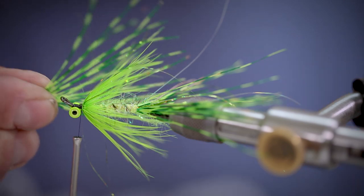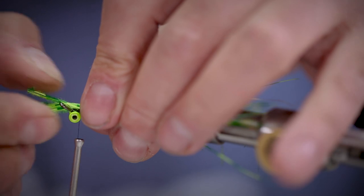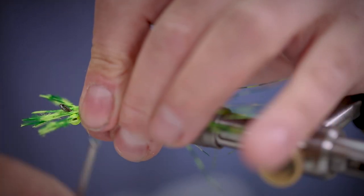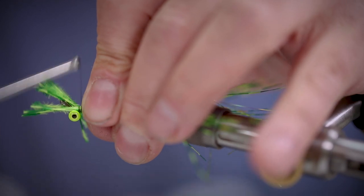Next we're going to tie in some more of our barred ostrich fibres. We're going to tie these all the way around the fly in a couple of sections.